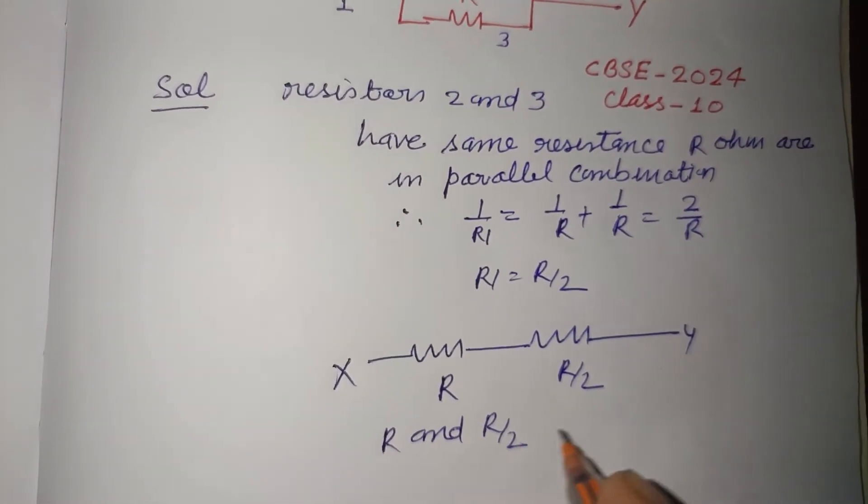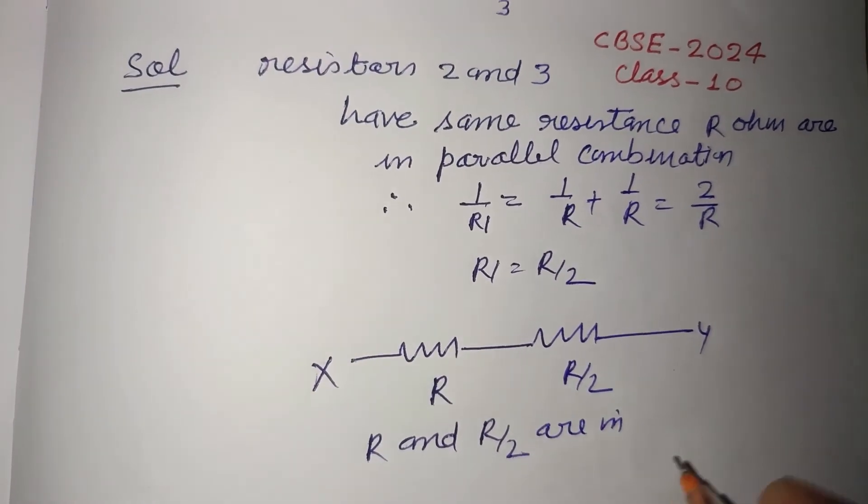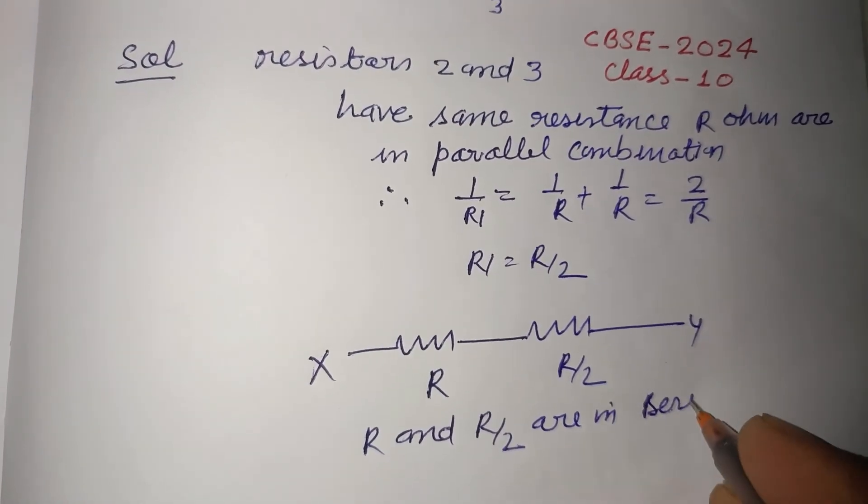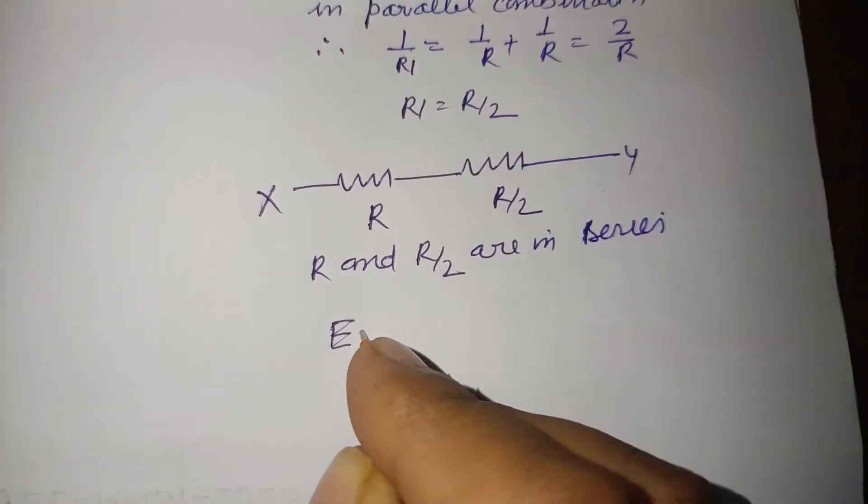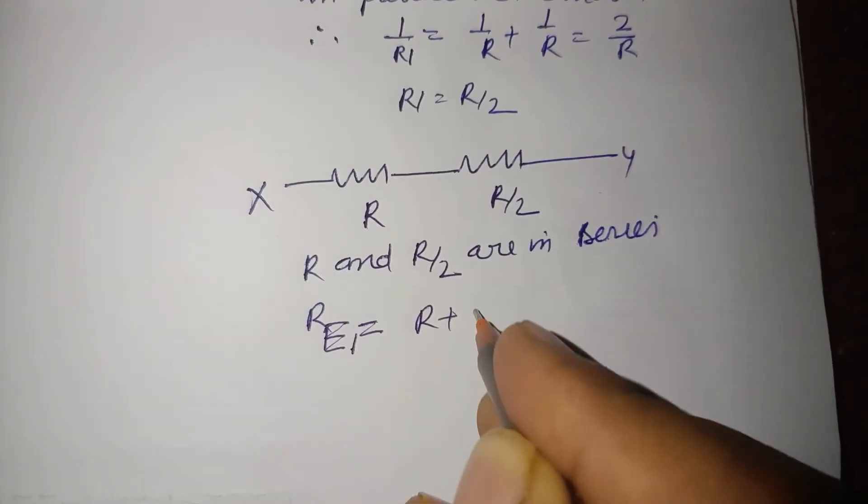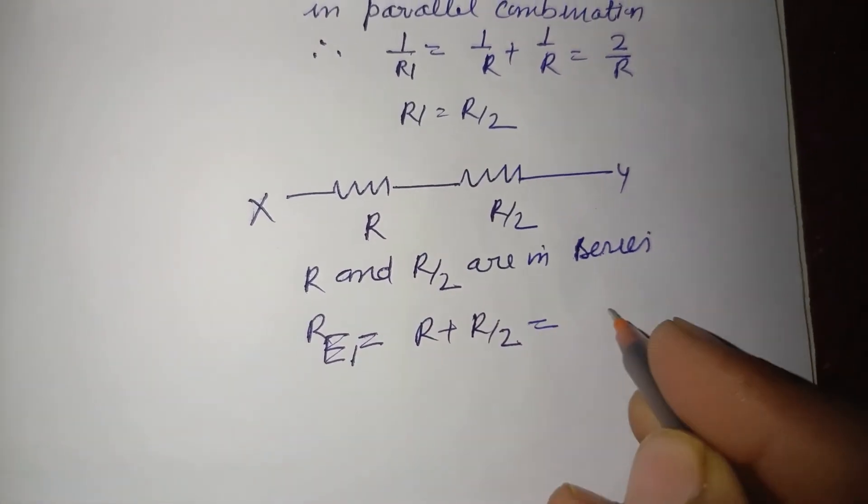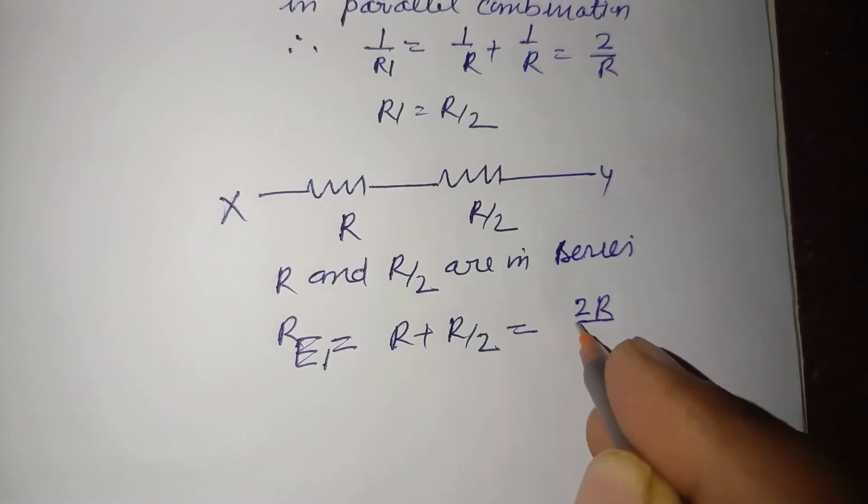and R/2 are in series. So equivalent resistance RE equals R plus R/2, so we can write it is 2R upon 2, and this is R/2, so R plus 2R